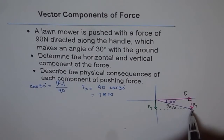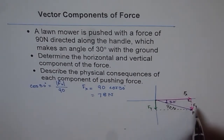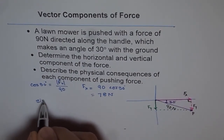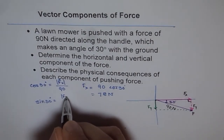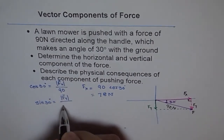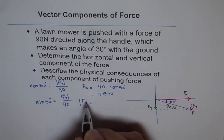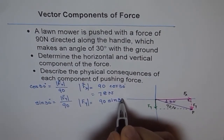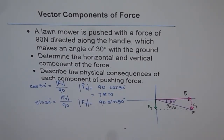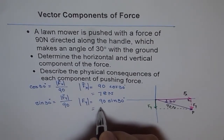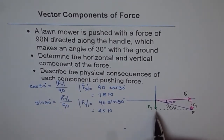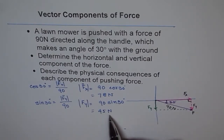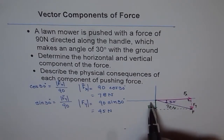Now let's look at the vertical component. The vertical component is pointing downwards. Fy is the side opposite to 30 degrees, so we use sine: sin(30°) = Fy / 90, which gives Fy = 90 × sin(30°) = 45 Newtons. So the force along the Y axis toward the ground is 45 Newtons, and the force horizontally along the ground is 78 Newtons.